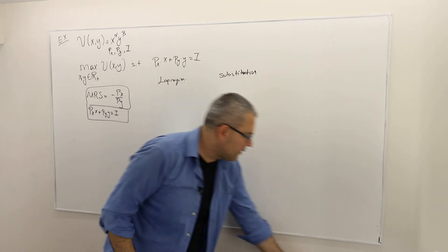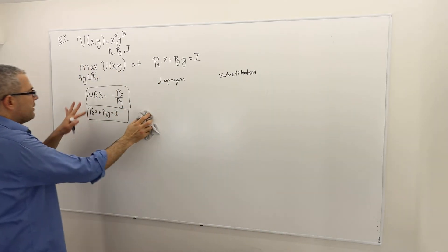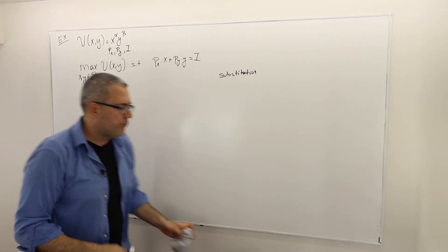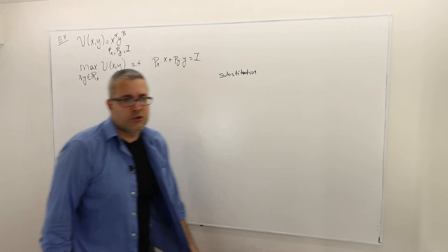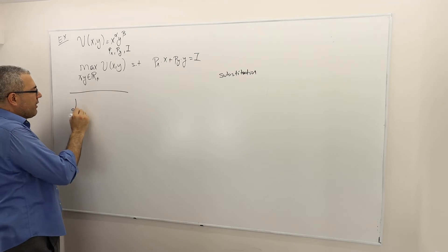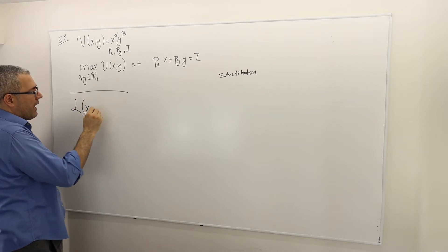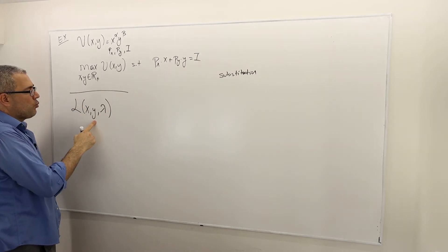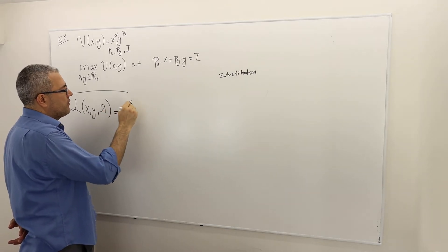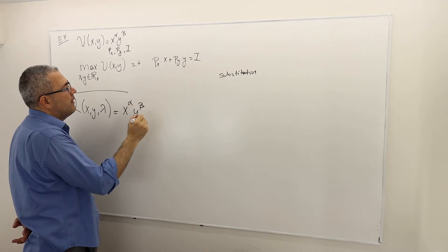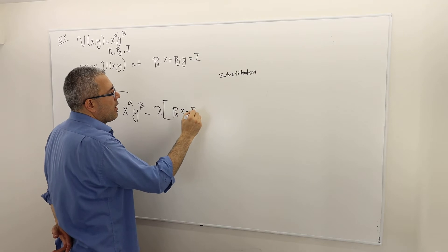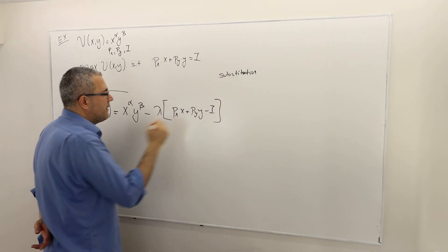Let's solve via the Lagrangian, because when we solve the Lagrangian problem we will automatically solve those two equations anyway. The Lagrangian has three parameters: x, y, and lambda. It is the objective function x^alpha * y^beta minus lambda times the constraint, which is px*x + py*y minus income.